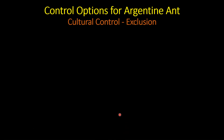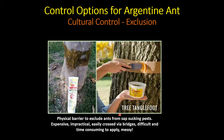Some cultural control options: exclusion using tanglefoot barriers around tree trunks may work temporarily, but it's expensive and messy to apply. As soon as debris like twigs, dust, or leaves get caught in the tanglefoot, it provides a bridge for ants to cross. The ants are also very good at finding other ways around these barriers — in one study, ants found a ladder leaning against a tree and walked up it right over the barrier. Not recommended for the most part.